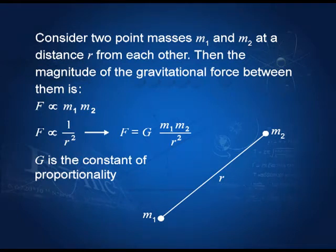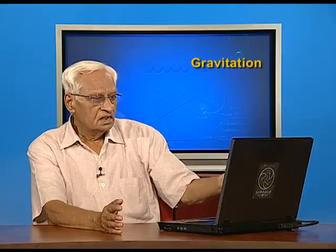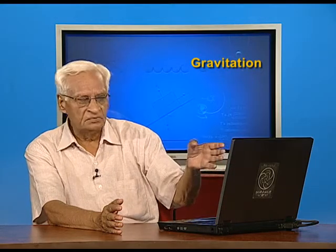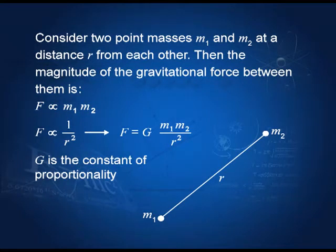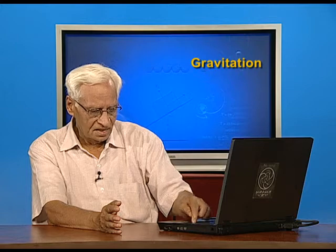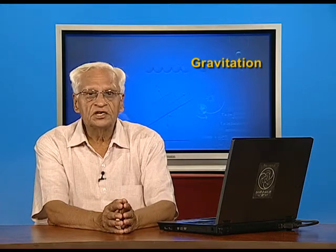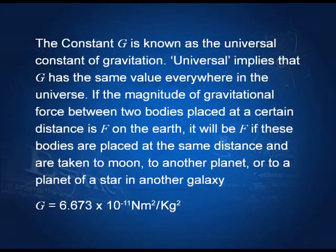Suppose we have mass m₁ and mass m₂ placed at a distance r, then the force between them can be written as m₁ times m₂ divided by r squared, multiplied by a constant G. G is known as the constant of proportionality — actually, G is the universal constant of gravitation.